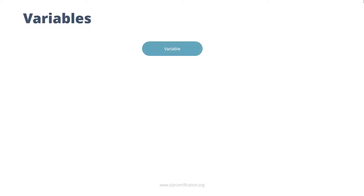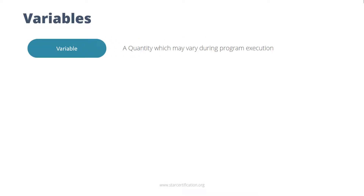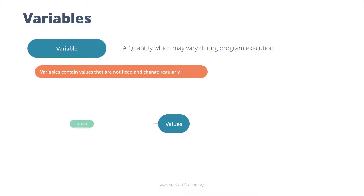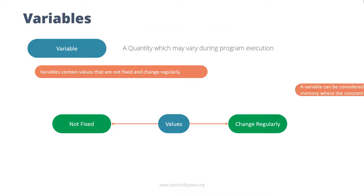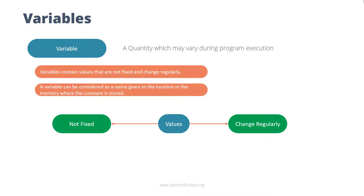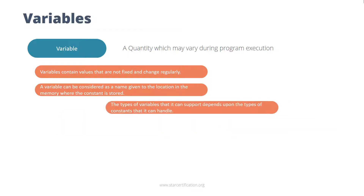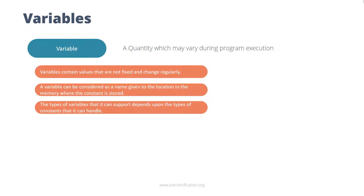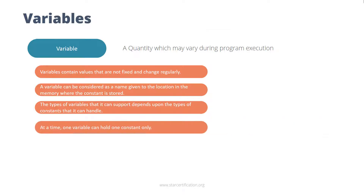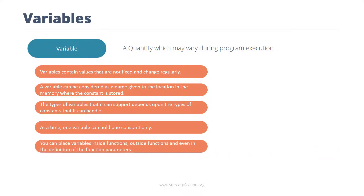Let's learn about variables. Variables contain values that are not fixed and change regularly. A variable can be considered as a name given to a location in memory where a constant is stored. The types of variables a language can support depends on the types of constants it can handle. At a time, one variable can hold one constant only. You can place variables inside functions, outside functions, and even in the definition of function parameters.